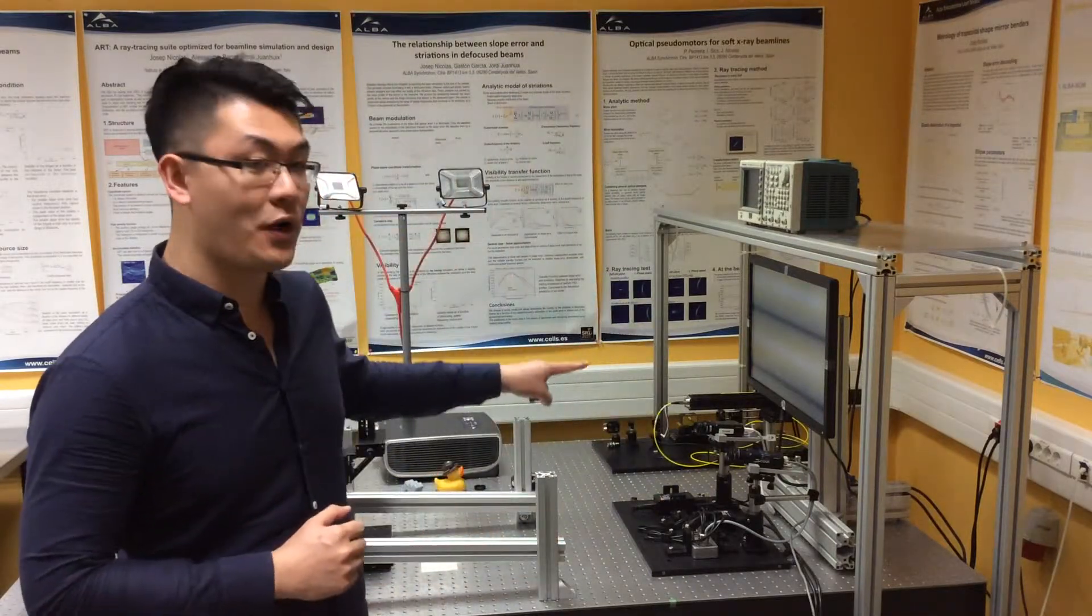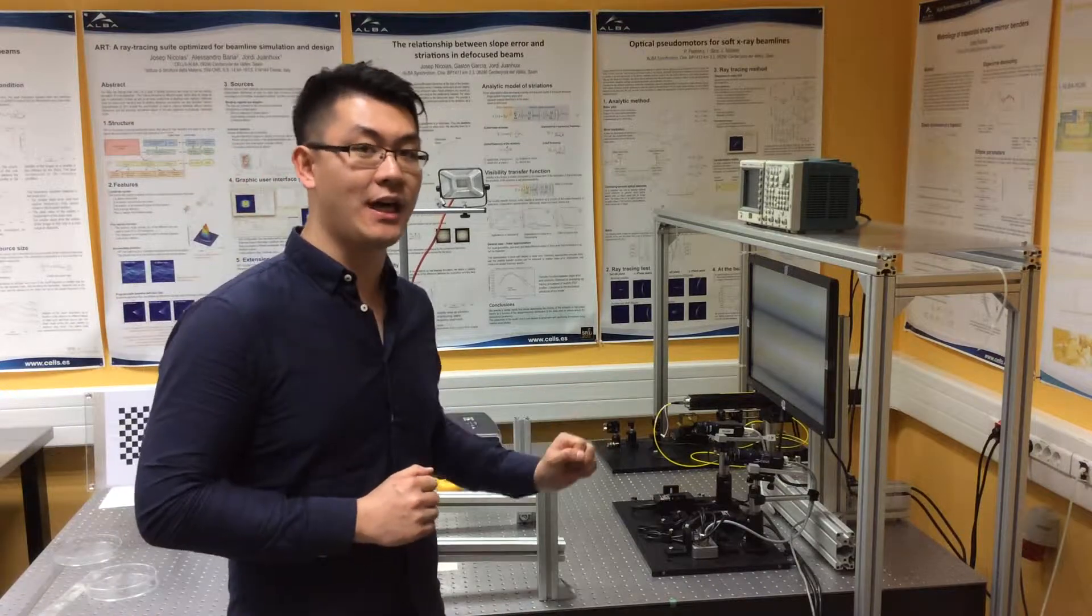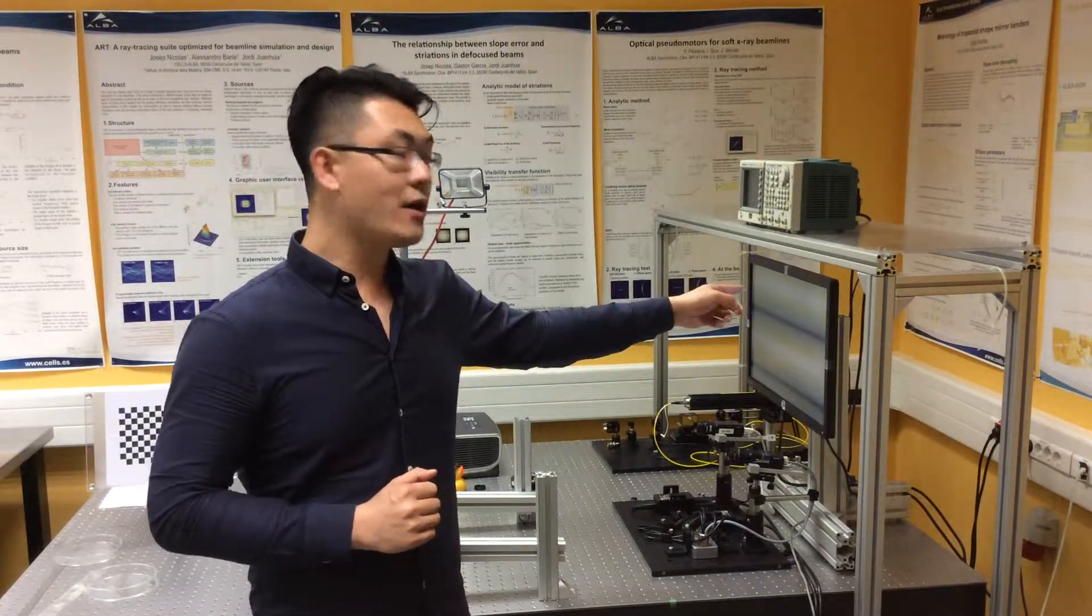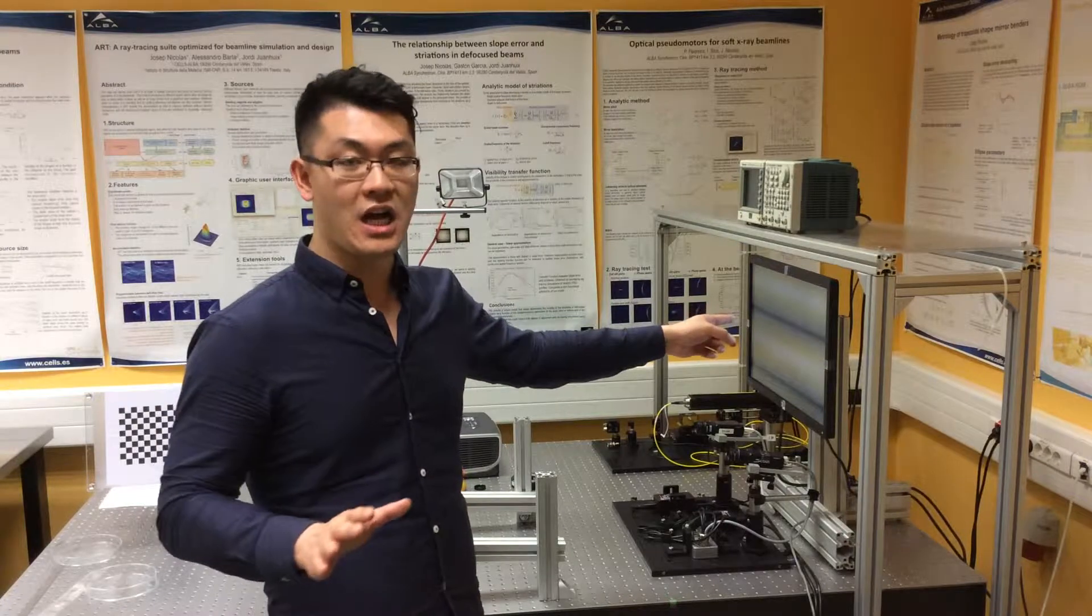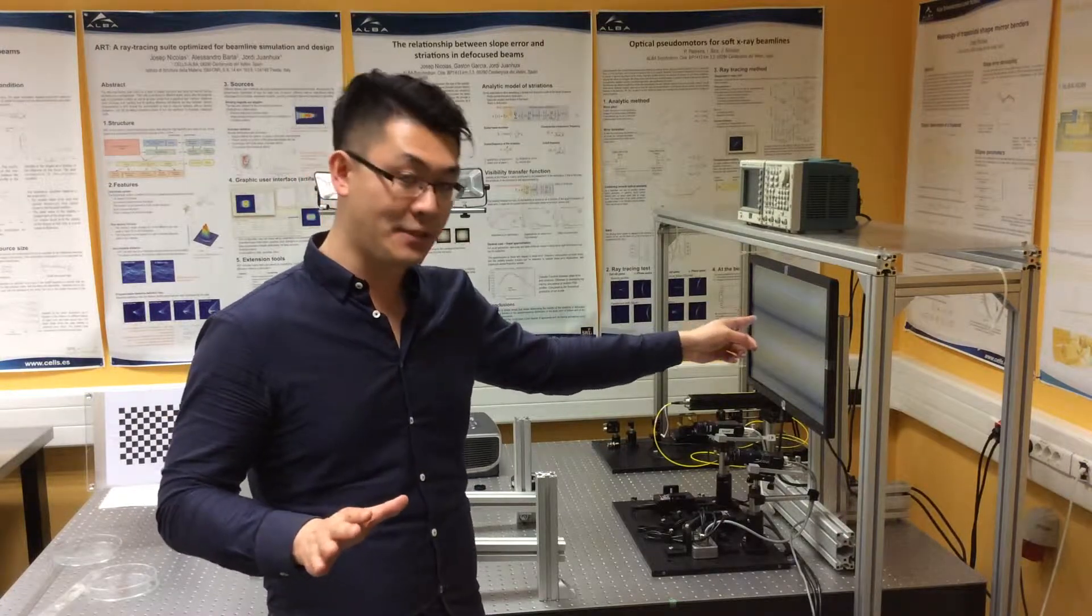So what is a phase-measuring deflectometry system? Well, this system is always used to realize the surface profile measurement of a specular object. In our case, we proposed a stereoscopic deflectometry system. Here, we have a very normal commercial liquid crystal display.